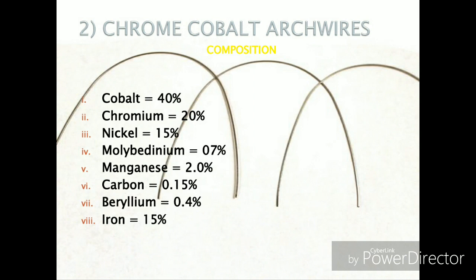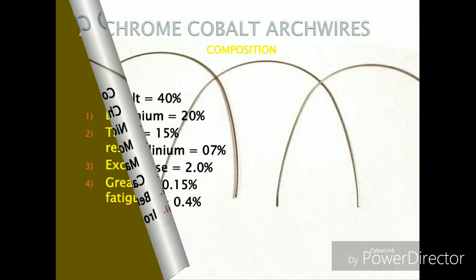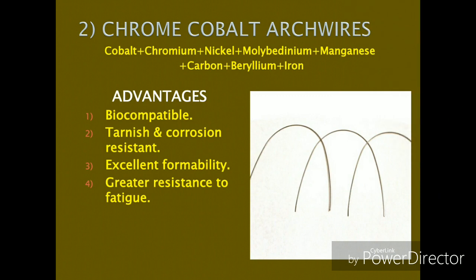Chrome cobalt is an ideal material for medical devices because it possesses the properties of being biocompatible, radiopaque, and non-magnetic. This alloy is used to make pacemakers, artificial heart valves, stents, and orthopedic wires. Regarding the composition of chrome cobalt arch wires in orthodontics: cobalt is the base element; chromium gives the passivating effect, making the wire corrosion resistant; nickel increases ductility; molybdenum acts as a hardener; manganese acts as an oxide scavenger; carbon increases strength, hardness, and ductility; and both iron and beryllium act as hardeners.